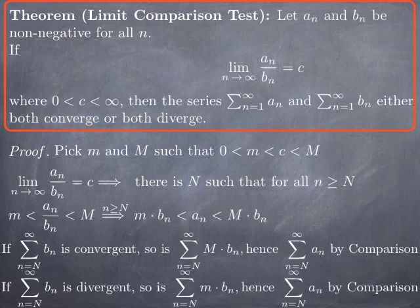On the other hand, if the series of b_n is divergent, so is the series starting at capital N, because we just remove finitely many terms and don't change convergence. When we multiply the general term b_n by a non-zero constant, we obtain again a divergent series whose general term is smaller than a_n, and therefore the series with the larger general term is also divergent. So the series of a_n is divergent by comparison starting at N, and therefore divergent starting at 1 as well. In summary: if the series of b_n is convergent, so is the series of a_n; if the series of b_n is divergent, so is the series of a_n.